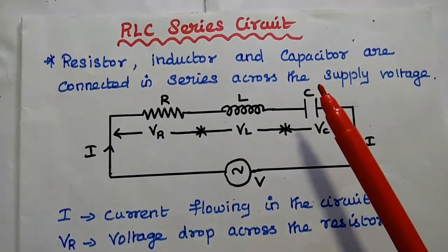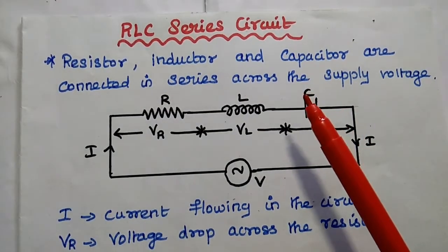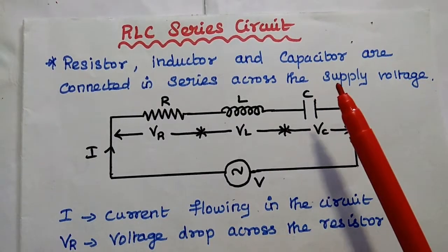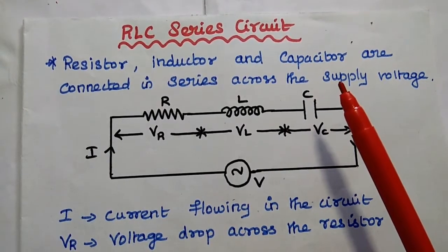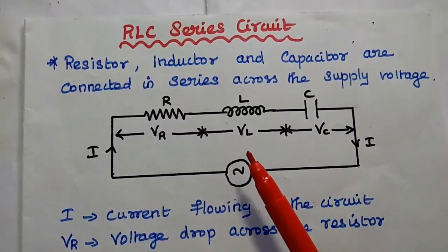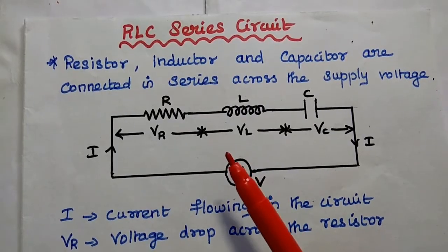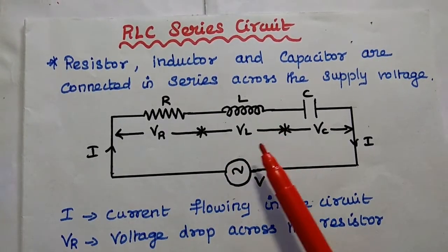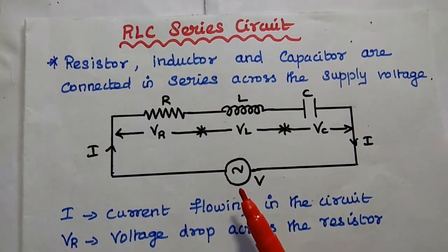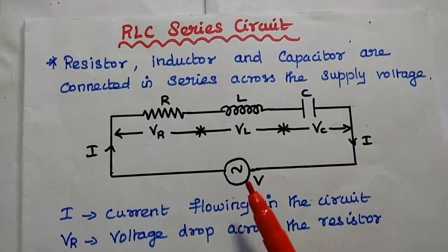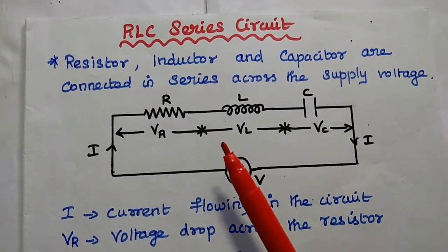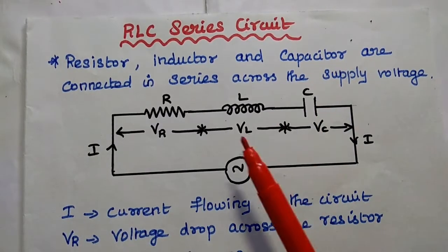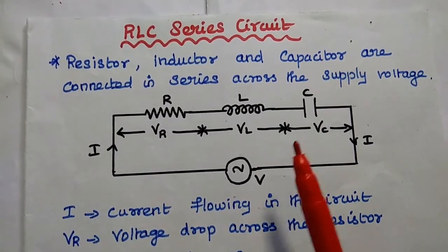Dear students, now we are going to discuss RLC series circuit and its phasor diagram in detail. It is an electric circuit which consists of a resistor, inductor and capacitor connected in series across the supply voltage. Simply we can say the resistor, inductor and capacitor all are connected in series.